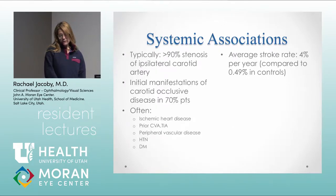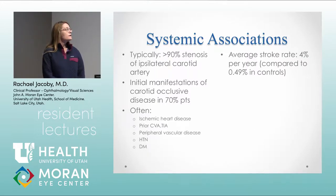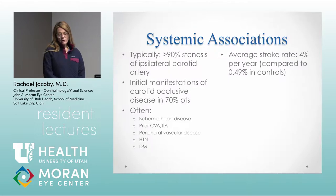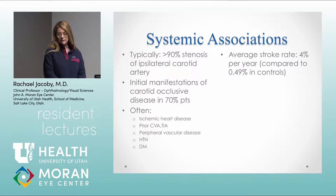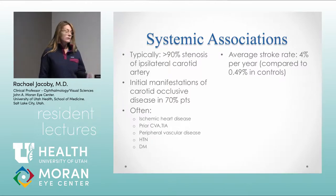Patients often have pretty severe stenosis of the carotid artery on the same side, and this can be the presenting finding for carotid occlusive disease in a high number of patients. This is important to keep in mind at the VA where we have a vasculopathic population, as they're often associated with ischemic heart disease, prior TIAs, peripheral vascular disease, diabetes, and hypertension. They have a higher stroke rate — 4% per year compared to just 0.5% in age-matched controls.